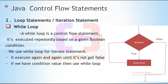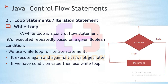Again, control comes back to the condition and checks it again. If the condition is still true, it keeps executing repeatedly until the condition becomes false. Once this condition gets false, control automatically comes outside this iteration and executes the statement after the loop.